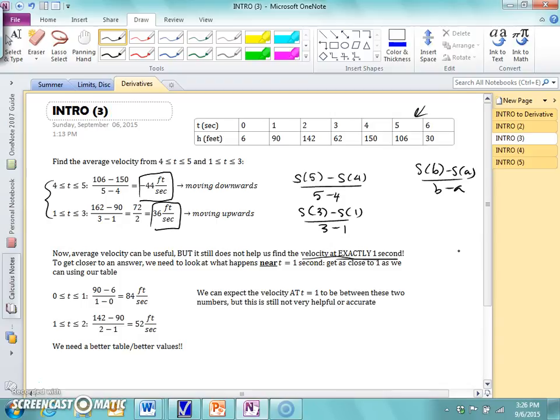Let's get a closer answer, or at least as close as we can get, using the values in our table. So let's do from 0 to 1 and from 1 to 2. So right here, I did s of 1 minus s of 0 all over 1 minus 0. Then I did s of 2 minus s of 1 all over 2 minus 1 using this formula here.